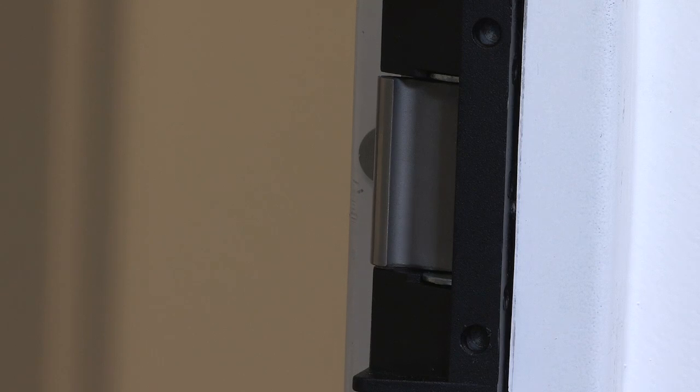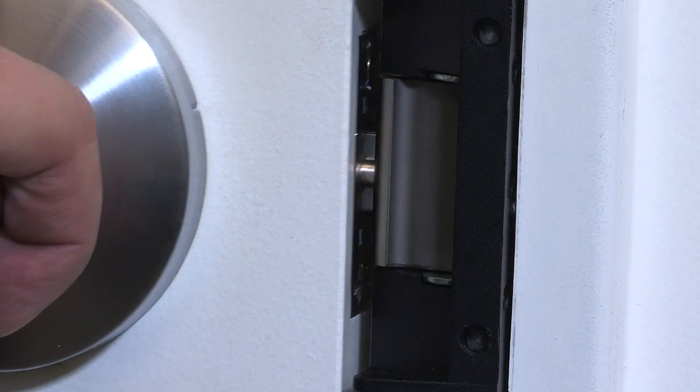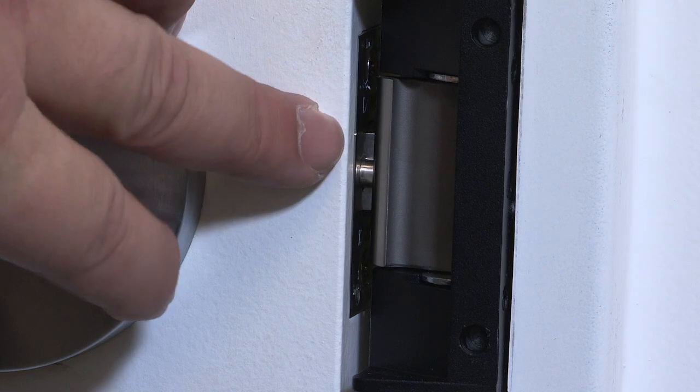Lastly, horizontal adjustment. This adjustment allows you to move the keeper closer or further away from the face of the latch.